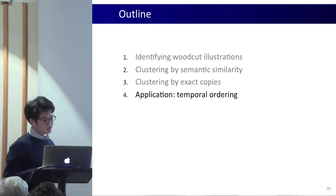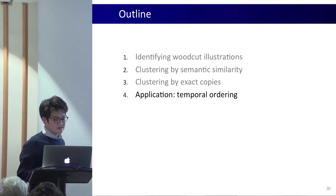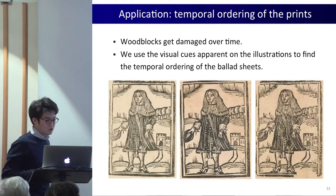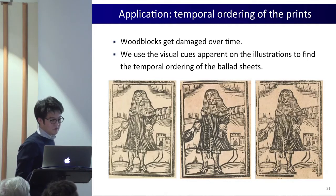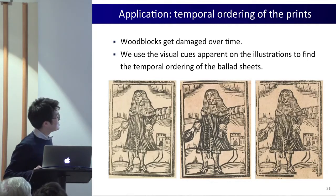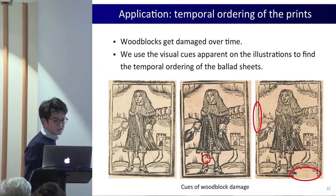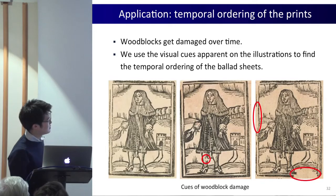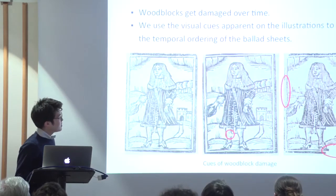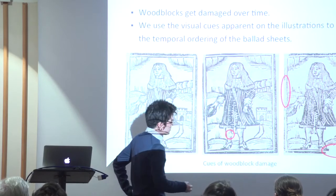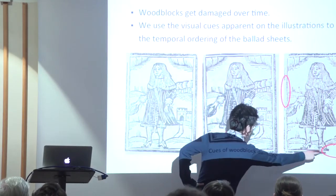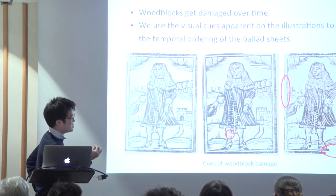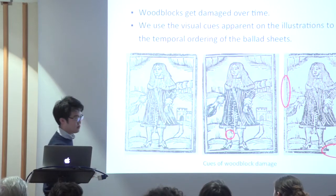Finally, having found which images come from exactly the same woodblock, we took the analysis a little further. We tried to order the illustrations from the same woodblock by looking at the visual damages, and learning a classifier which can automate the ordering. For example, because we have a damage here but not here, we know that the woodblock was damaged after printing one image but before printing the one on the right.